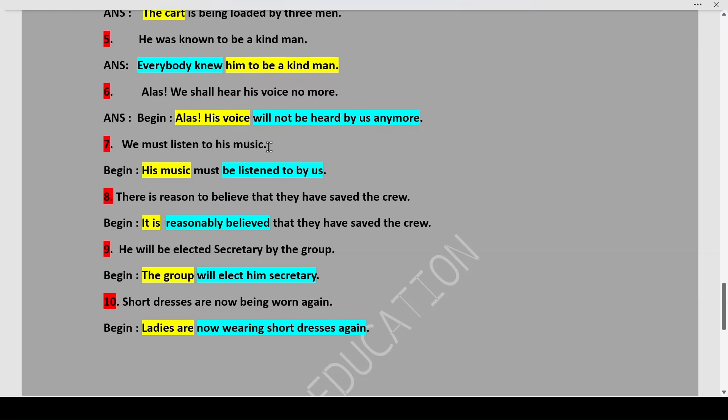There is reason to believe that they have saved the crew. Begin with it is reasonably believed that they have saved the crew. They have saved the crew remains the same but it starts with it is reasonably believed that he will be elected secretary by the crew. The crew will elect him secretary. Can you notice how the tenses are changing and how the pronouns are changing when they are being interchanged the subject and the object?